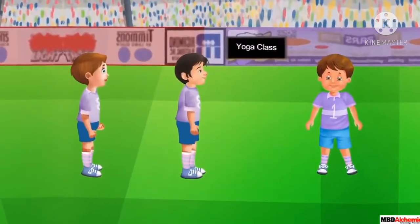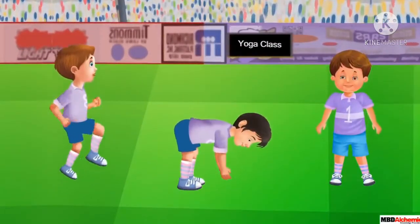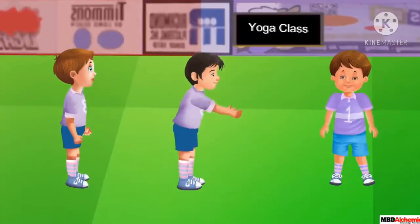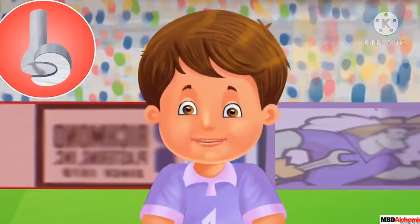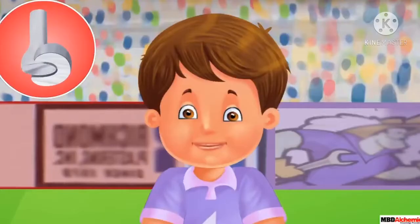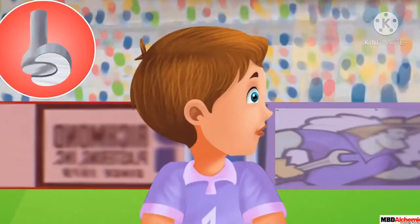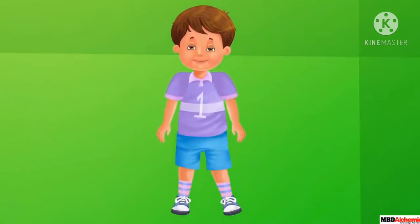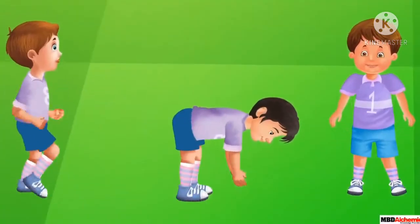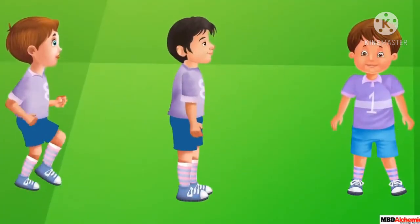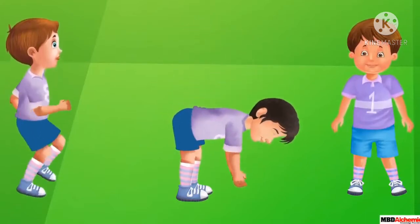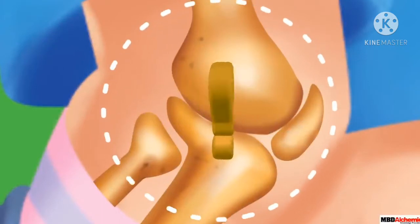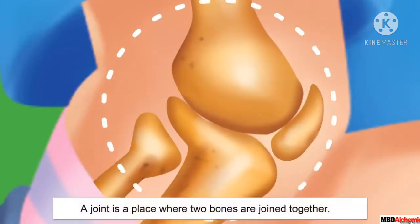Children, while doing exercise, we bend our legs at knees, we bend our hands at elbows, sometimes we turn our head towards our left and right, and sometimes we lift our head or bend our head. We are able to bend or rotate our body only in the places where two parts of our body seem to be joined together, and these places are called joints.